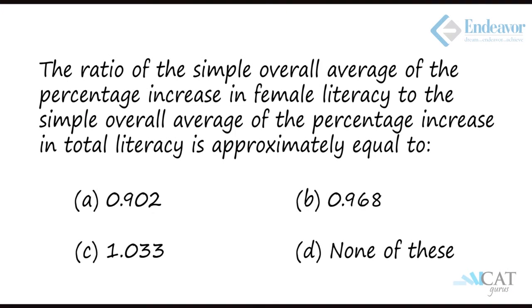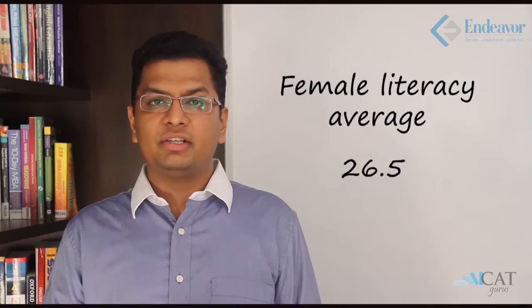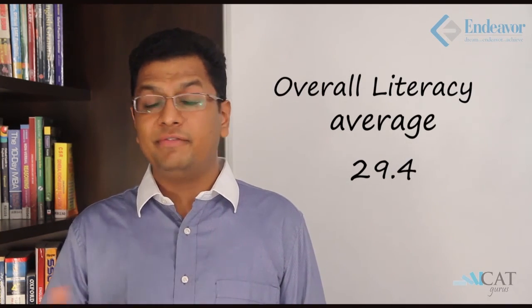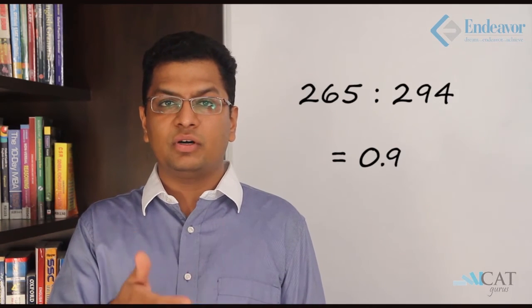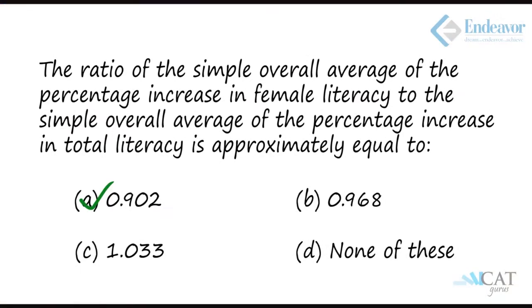Question 5: The ratio of the simple overall average of percentage increase in female literacy to the overall average of percentage increase in total literacy. We already found female literacy average to be 26.5. The sum of overall literacy comes to 294, versus 265 for female literacy. The ratio is therefore approximately 0.9, making option A the right answer.